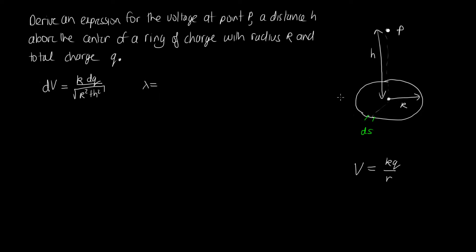So we know we're told in the question that there's a total charge of q around this ring here. And so the linear charge density is given by q divided by the length. And in this case it's a circle, so we've got the circumference of the circle. So this will be our linear charge density.